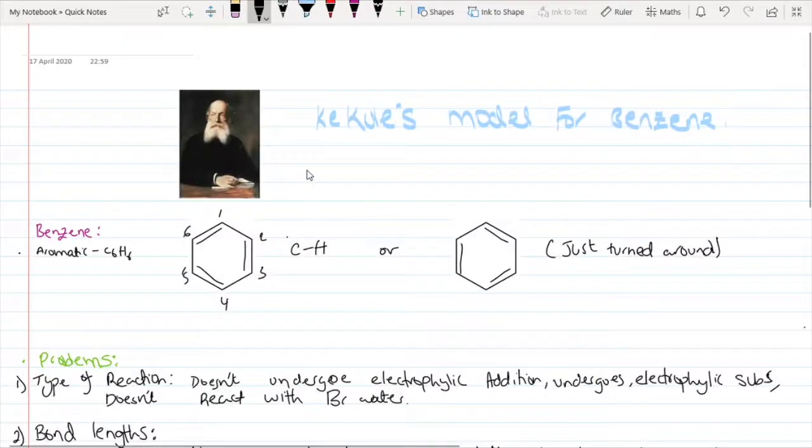Moving on to the second problem with Kekulé's model, this is to do with bond lengths. As you can see in his model, it's composed of carbon-to-carbon double bonds and carbon-to-carbon single bonds.